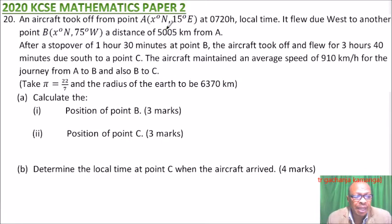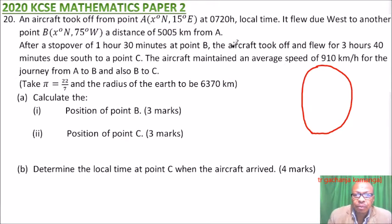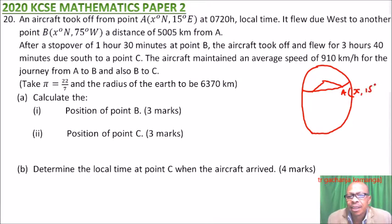We need to find x first, since finding x will give us the position of B. We make a sketch to guide us. A and B are on the same latitude, which is latitude 15. So we mark the center of the circle, and indicate point A at x degrees north, 15 degrees to the east.